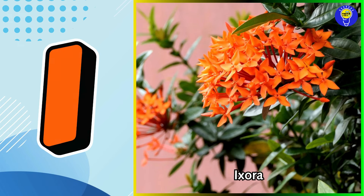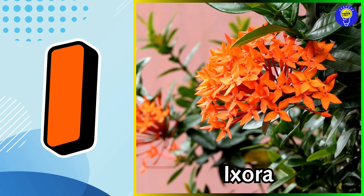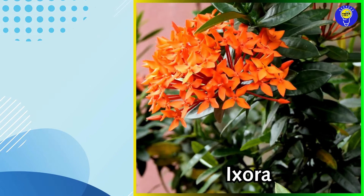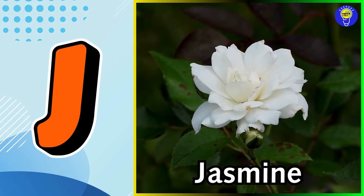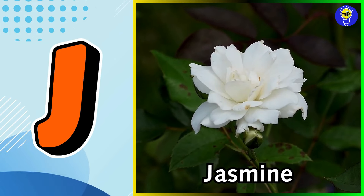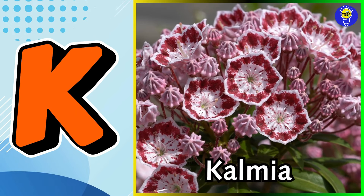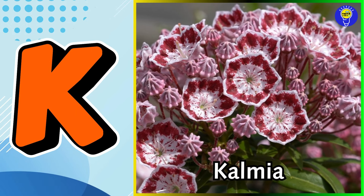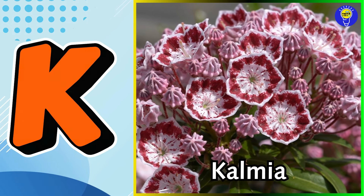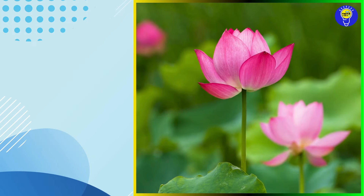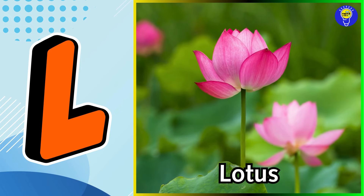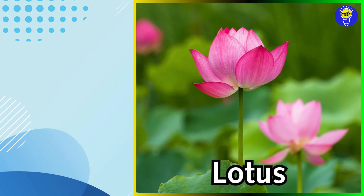I is for Ixora flower. I, I. Ixora flower. J is for Jasmine flower. J, J. Jasmine flower. K is for Kalmia flower. K, K. Kalmia flower. L is for Lotus flower. L, L. Lotus flower.